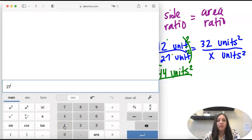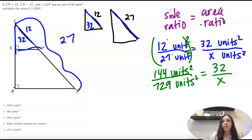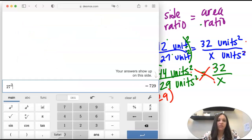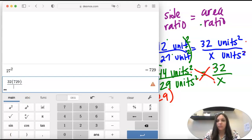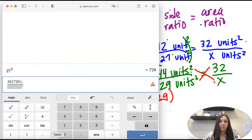I don't know what 27 squared is — 27 squared is 729. And now I also have units squared. So we have 144 over 729 equals 32 over x. Now we don't need the units part anymore because now they're equal. So now we're going to cross multiply: 144 times x equals 32 times 729, and we're going to solve. 32 times 729 divided by 144 gives us 162.